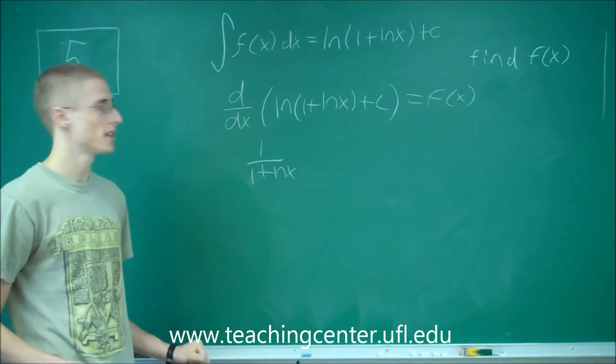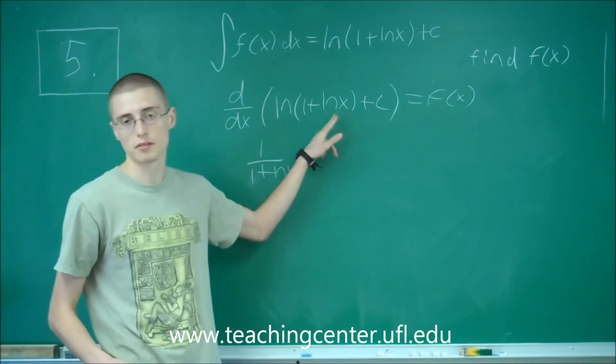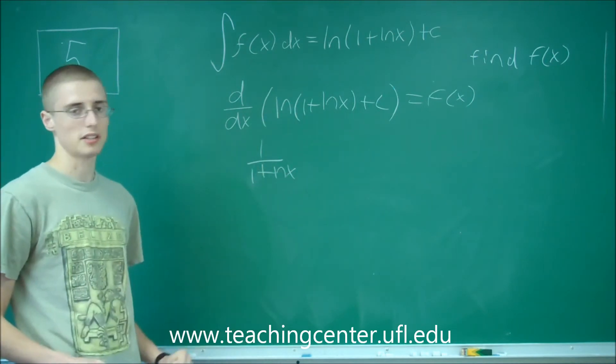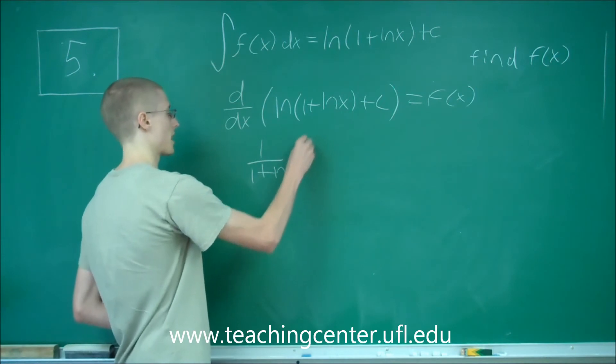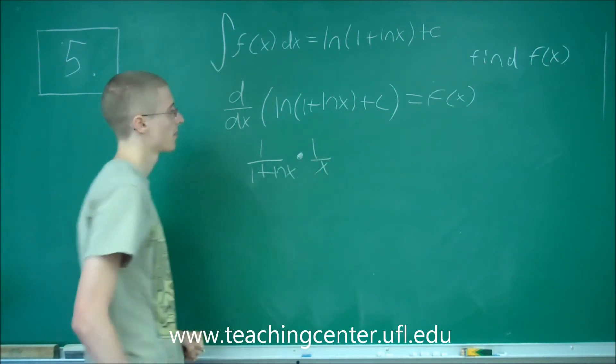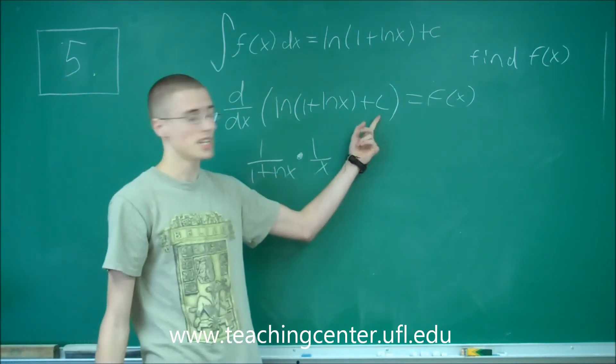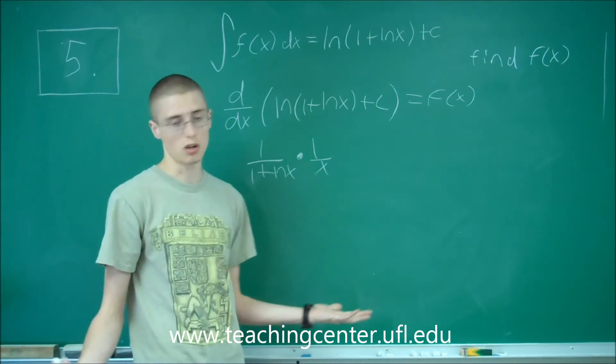Multiplied by the derivative of the inside—the inside is 1 plus ln of x. The derivative of 1 plus ln of x is just 1 over x, so we multiply that by 1 over x. The derivative of c is just 0, c is a constant.